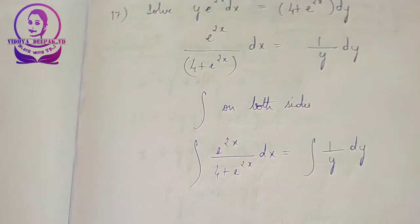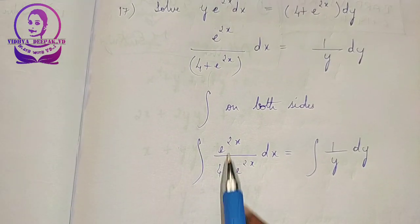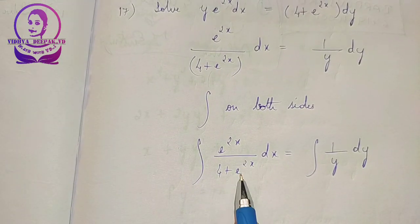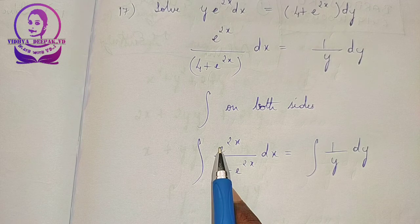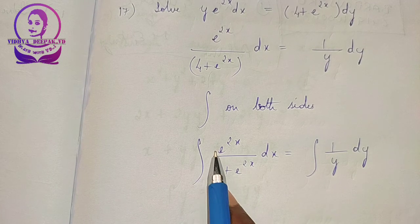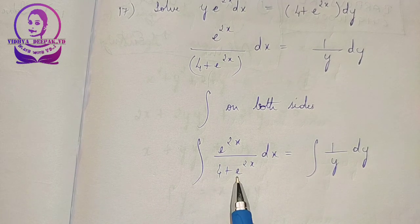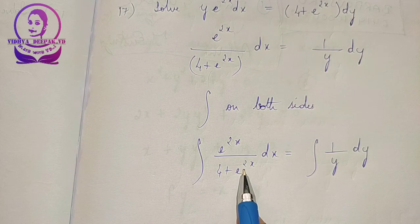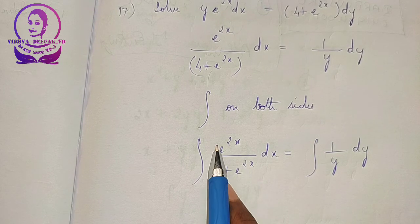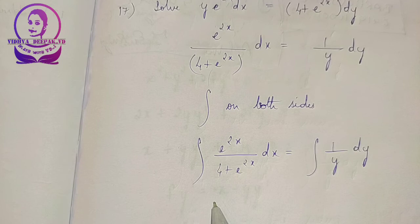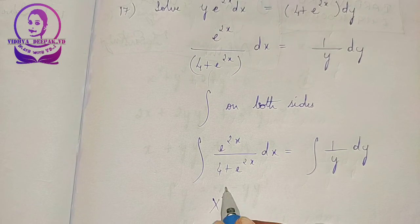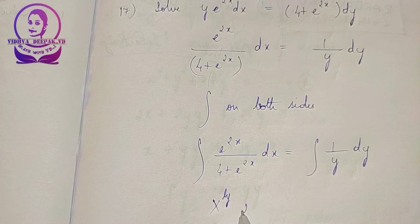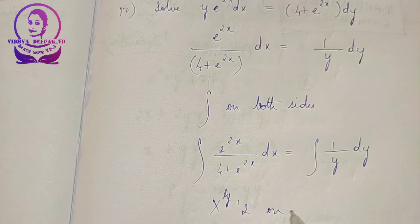If you observe clearly, if I differentiate the denominator 4 plus e to the power of 2x, I will get e to the power of 2x into 2. So I need a 2 in the numerator. I am multiplying 2 on both sides.